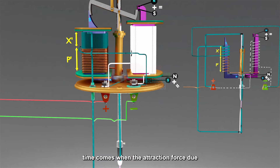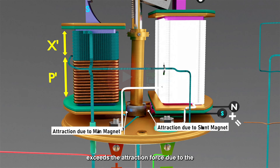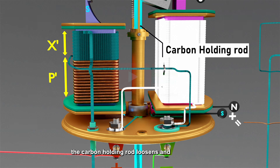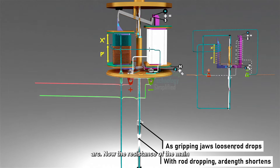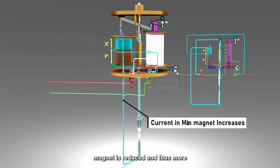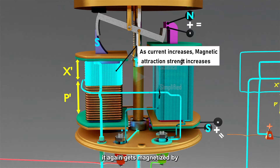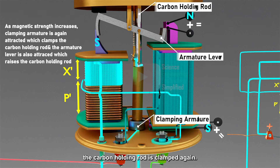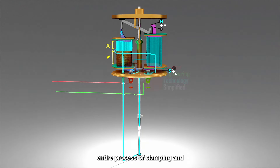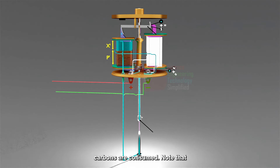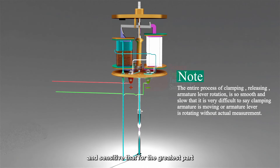A time comes when the attraction force due to the shunt magnet on this armature exceeds the attraction force due to the main magnet. Therefore, the clamping armature moves slightly towards the shunt magnet. As soon as this happens, the hold of the gripping jaws on the carbon holding rod loosens, and the rod drops a little, shortening the arc. Now the resistance of the main magnet is reduced, more current flows through it, and the fine wire receives less current, so the magnet is re-magnetized by magnetic induction. The carbon holding rod is clamped again and slightly raised if necessary. This entire process of clamping and releasing the armature and rotation of the armature lever continues until the carbons are consumed. Note that this entire process is so smooth and sensitive that for the greatest part of the time, the movement of the rod cannot be detected without some actual measurement.